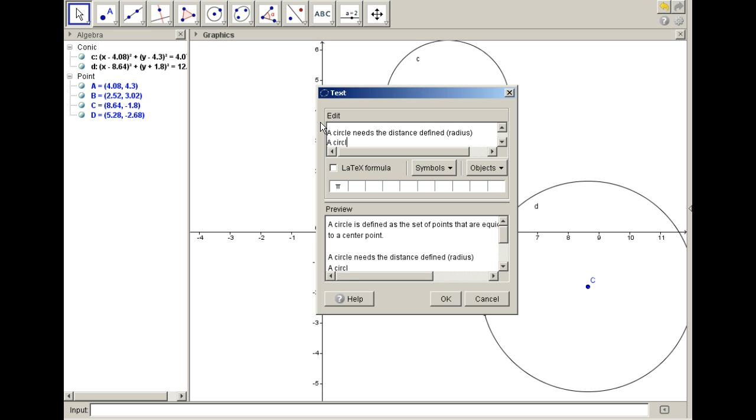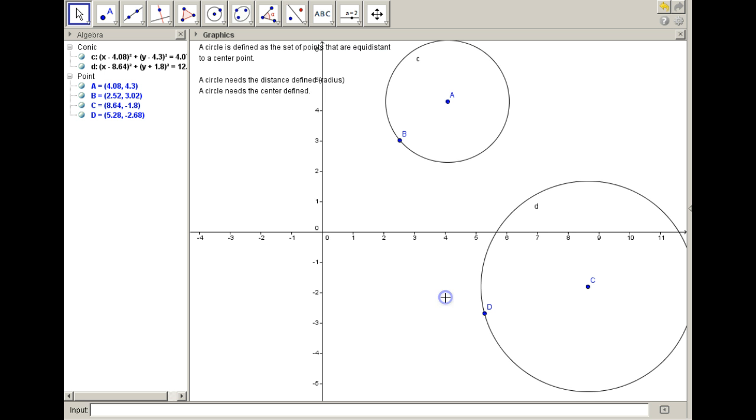And a circle needs the center defined. So if we think about it, what we need to do to make one circle similar to another, to prove that circles are similar, is prove that one circle can be transformed into another circle.